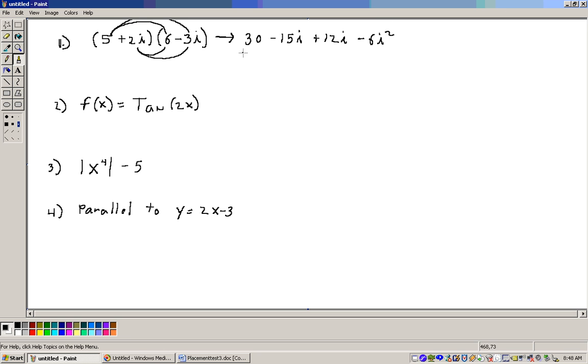Now, we can combine the like terms here and get 30. Minus 15i plus 12i is minus 3i. And then, that's combining these two right here, minus 15i plus 12i is minus 3i. And then minus 6i squared.